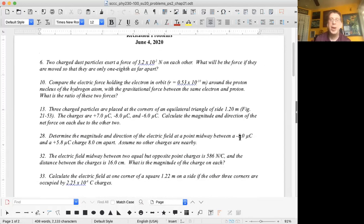For number 10, compare the electric force holding the electron in orbit. You're given the distance from the electron to the nucleus around the proton nucleus of the hydrogen atom, so you're given r. With the gravitational force between the same electron and proton, what is the ratio of these two forces?